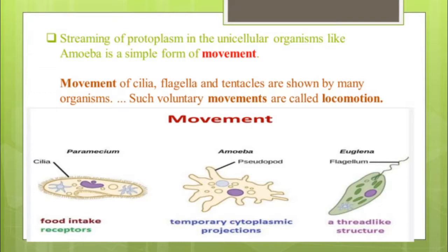In the first diagram there is Paramecium, which has cilia as its locomotory organelles; in addition to locomotion, cilia also help in food intake. In Amoeba, temporary cytoplasmic projections form a false foot, also known as pseudopodia. In the third diagram, Euglena shows a long whip-like structure called a flagellum, which helps in locomotion and food collection.